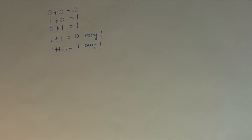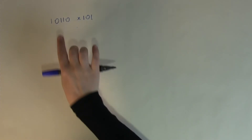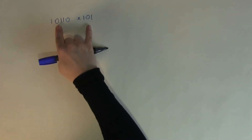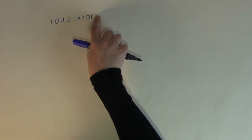Now, how does binary multiplication using the partitioning method work? For example, multiply 10110 by 101. First, look at which is the smaller number. Obviously, 101 is the smaller number, so this is the number I'm going to partition. 101 is the sum of 100 plus 1.